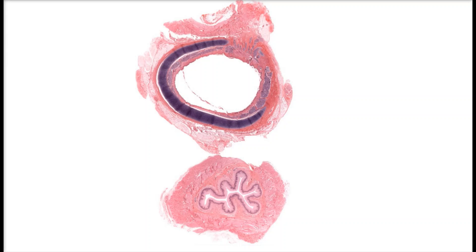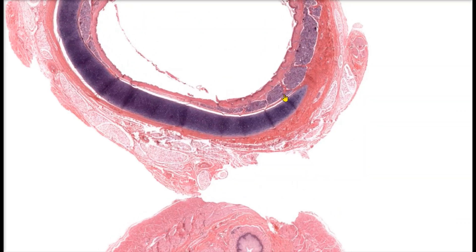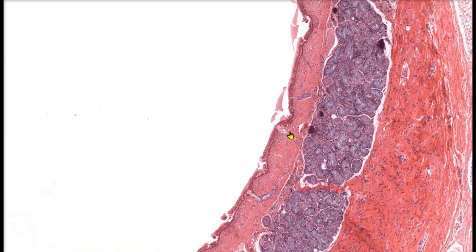When we look at the slide on the screen, we can see two separate organs. The organ on the top is the trachea, the airway that travels towards the lungs. Below the trachea, we have the esophagus, which transports foods and liquids to the stomach. In order to see pseudostratified columnar epithelium, we're going to focus on the trachea portion of the slide and zoom in.